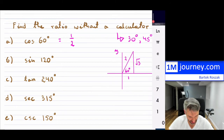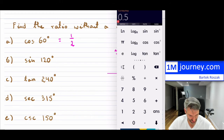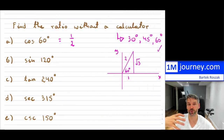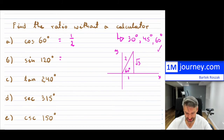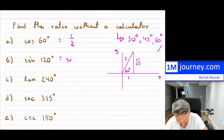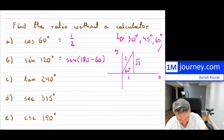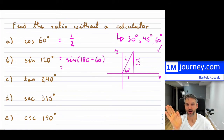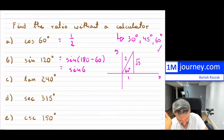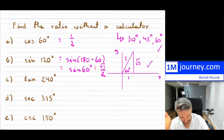You can verify by checking with a calculator, but it's always useful to know these ratios. Now sine of 120: that's bigger than 90, so it's in the second quadrant. It's 180 minus 60, so the reference angle is 60. In the second quadrant, sine — the y-value — is positive. So sine of 120 equals sine of 60, which is opposite over hypotenuse = √3/2.